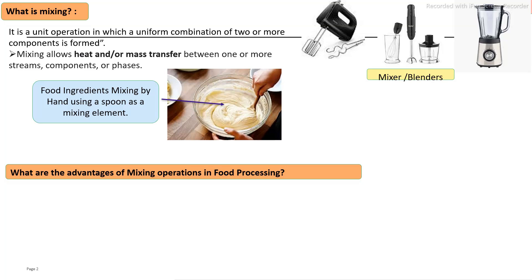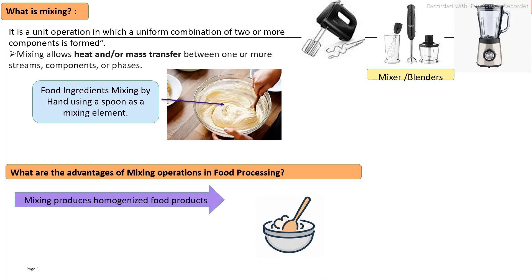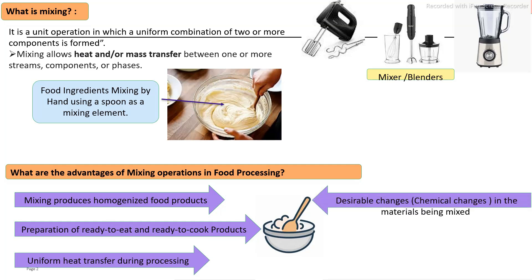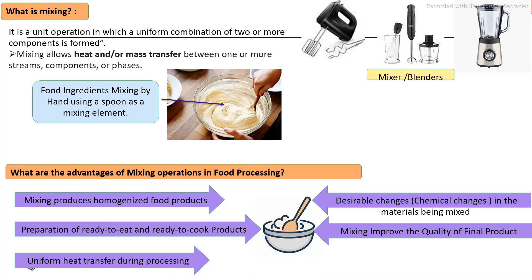The main advantages of mixing in the food processing industry are: first, it prepares a homogeneous product as per requirement; second, it produces ready-to-eat and ready-to-cook final products meeting various requirements; third, it enables uniform heat transfer during product preparation, allowing heat and mass transfer; fourth, a number of chemical reactions occur after mixing of ingredients with heating and cooling; and fifth, mixing improves the quality of the final product.